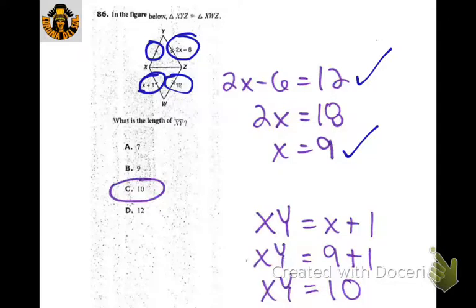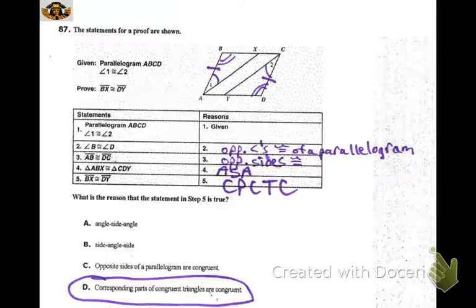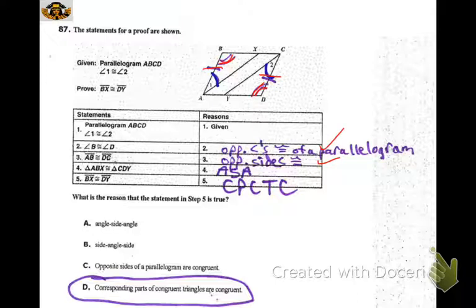Filling in the proof: we've got a parallelogram, angle 1 is congruent to angle 2. Because it's a parallelogram, AB is congruent to DC — opposite sides are congruent — and angle B is congruent to angle D — opposite angles are congruent. Then we can prove the triangles congruent by angle-side-angle. Then by CPCTC, BX is congruent to DY.